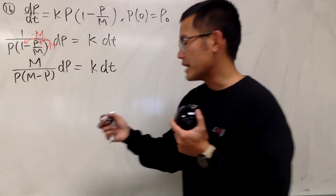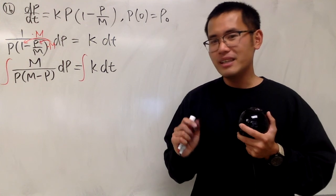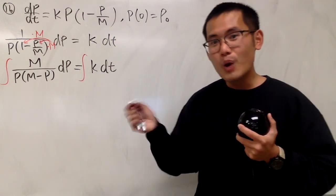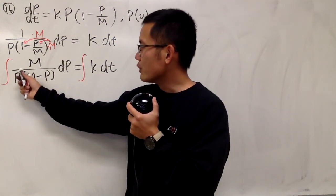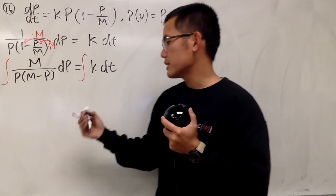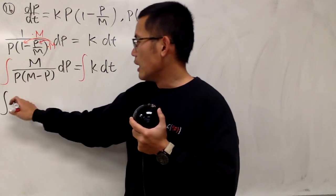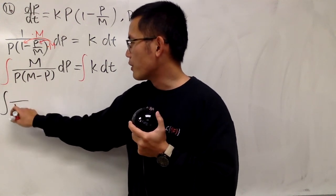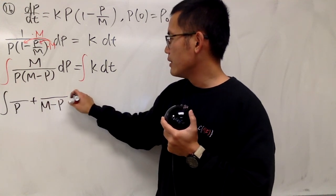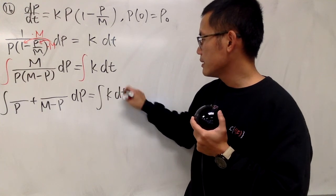Now, integrating both sides, you notice I haven't shown you guys any partial fractions. I know, but here it is. This is where we have to use partial fractions. Notice this is p to the first, and this is also linear, m minus p to the first. So I will have to first get something over p plus something else over m minus p. Let me still keep the integral k dt.